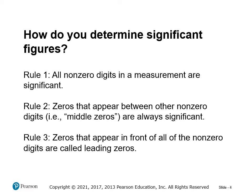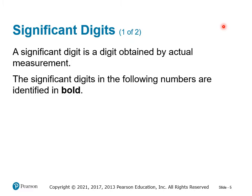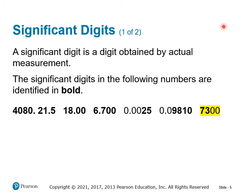All non-zero digits in a measurement are significant. Zeros that appear between non-zero digits — you might think of these as middle zeros — are always significant. Zeros that appear in front of the non-zero digits are called leading zeros. A significant digit is a digit obtained by actual measurement. You can see the significant digits in the following numbers shown in bold.